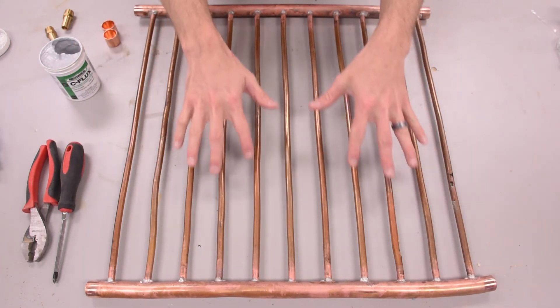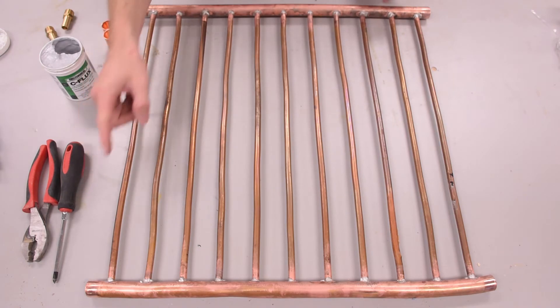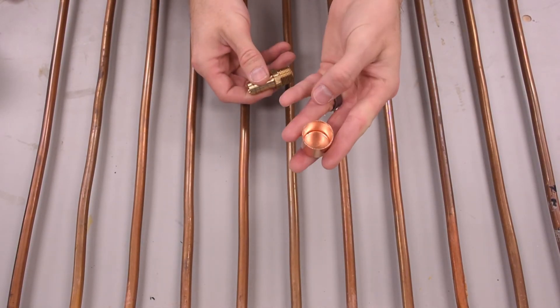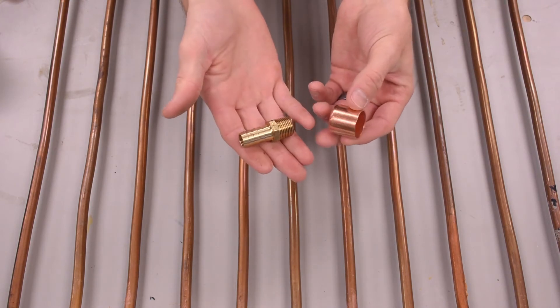It will come in down here, flow up the tubes equally, then head back out the top. I had to adapt the three-quarter inch copper to half inch PVC tubing.